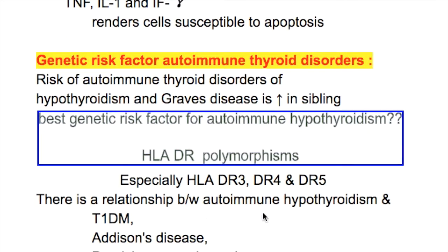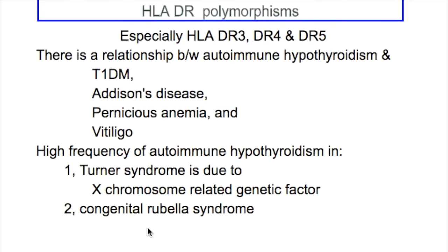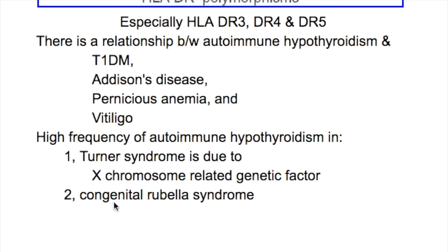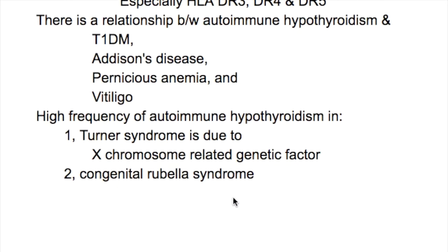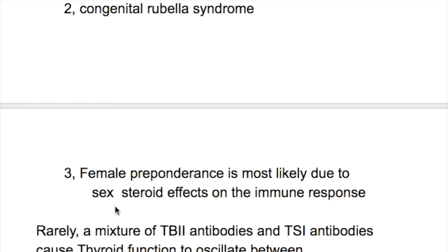There is a relationship between autoimmune hypothyroidism and type 1 diabetes, Addison's disease, pernicious anemia, and vitiligo. There is a high frequency of autoimmune hypothyroidism in Turner syndrome, due to X chromosome-related genetic factors. Autoimmune hypothyroidism is also related to congenital rubella syndrome, and female preponderance is most likely due to sex steroid effects on immune responses.